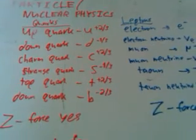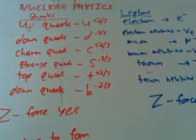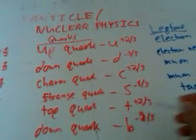The up quark has a positive two-thirds charge, the down quark has a minus one-third charge, and then each alternates: plus two-thirds, minus one-third. Actually, sorry — that should not be two-thirds on the down quark; the down quark should be minus one-third. Basically it alternates between plus two-thirds and then minus one-third.